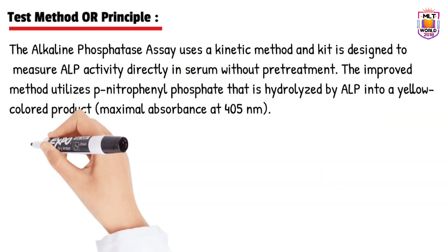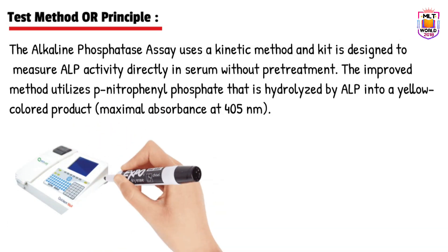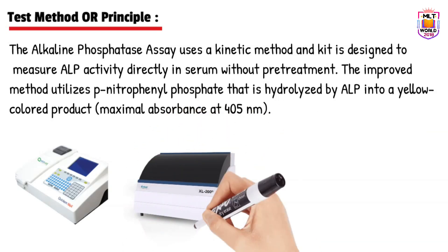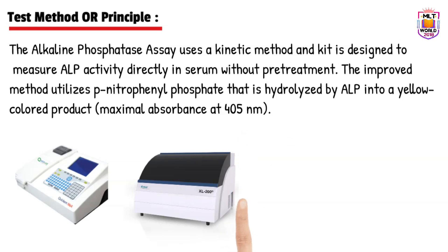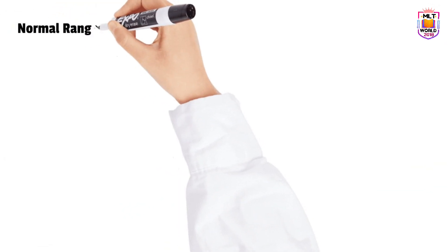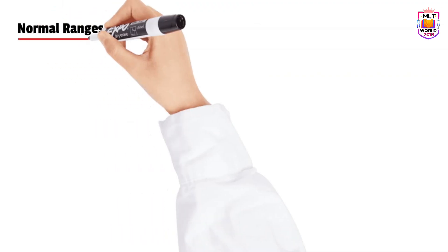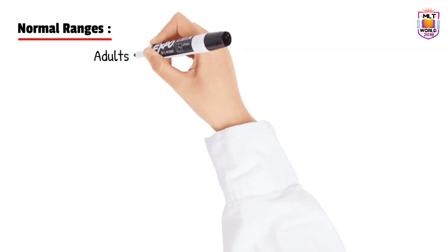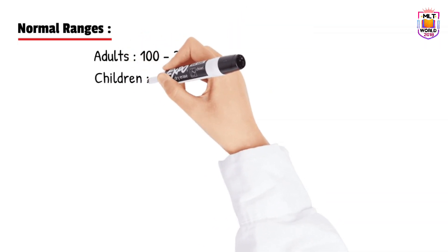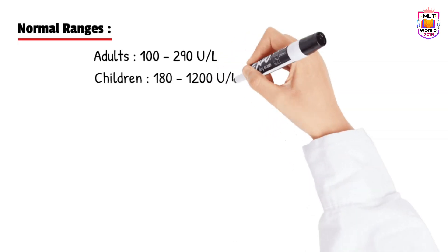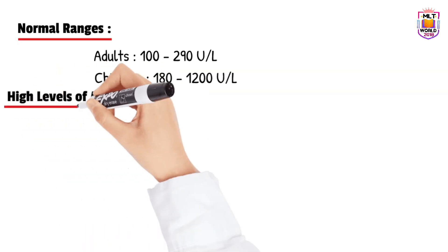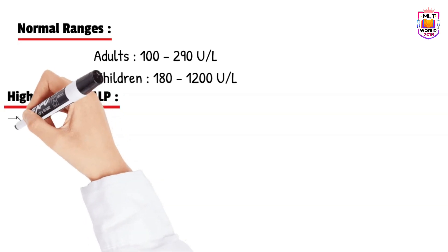That yellow product is measured by the machine at a wavelength of maximal absorbance at 405 nanometers. Different biochemistry analyzers are available on which this test is performed, such as Microlab, Roche, Mindray, and others. The normal range can vary lab to lab and differs in adults and children. In adults it is 100 to 290 units per liter, and in children alkaline phosphatase levels are higher: 180 to 1200 units per liter.